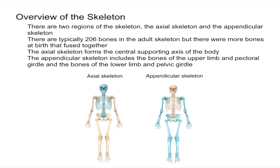It's important to remember that there are typically 206 bones in the adult skeleton, but there were more bones at birth that fused together. Some examples are the bones in your head that fused together.